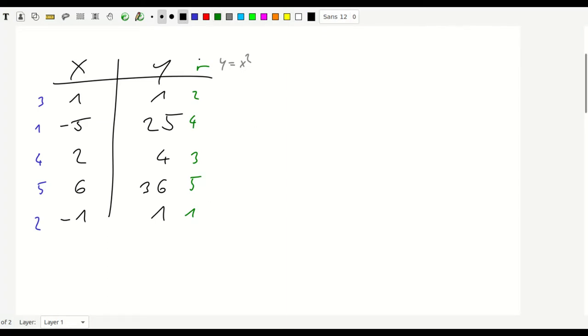Now we have our ranking of both x and y and what we're going to do is now we're sorting it according to this ranking. So we have a new table and we're writing it down sorted by this column. So the first one is minus five, y for this is 25. Number two is minus one, which is one. Number three is one, which is also one. Four is two, this is number four.